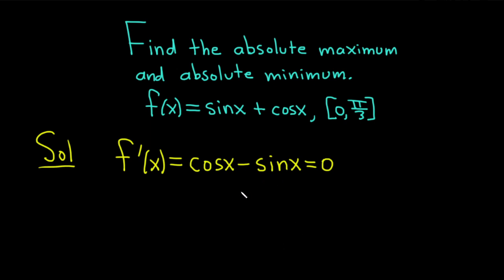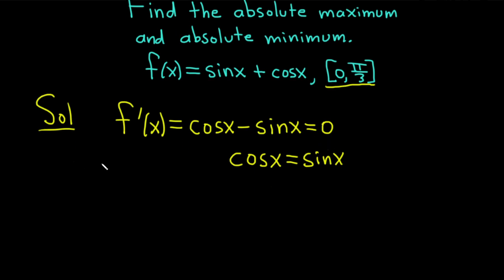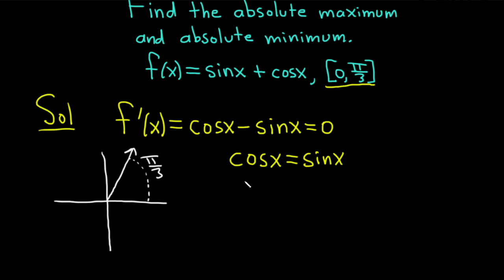We add sine x to both sides and we get cosine x equals sine x. This equation alone has infinitely many solutions. However, we're restricted to the interval 0 to pi over 3, so let's draw a little picture of the unit circle. Pi over 3 is this angle here. Cosine equals sine at pi over 4, drawn in blue, because the cosine of pi over 4 is square root of 2 over 2, and the sine of pi over 4 is also square root of 2 over 2. So they're equal at pi over 4, meaning x equals pi over 4.